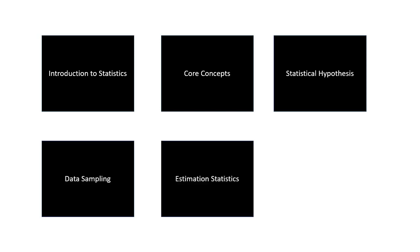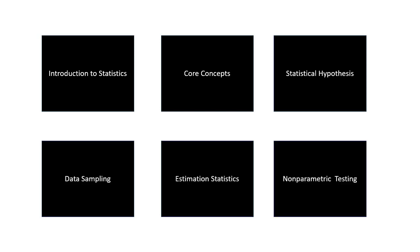Fifth, we'll cover estimation statistics — an alternative to hypothesis testing including tolerance intervals, confidence intervals, and prediction intervals. The sixth section covers non-parametric statistical hypothesis testing methods for use when the data does not meet the expectations of parametric tests, i.e., it's not in a typical normal distribution. Almost every example throughout the course will have Python-related code to help cement the lecture topics. By the end of this course, you'll have a solid foundation on how to apply statistics to your machine learning models.